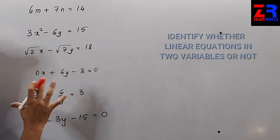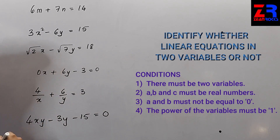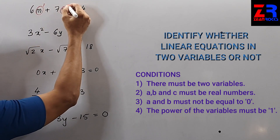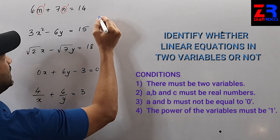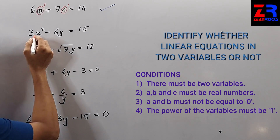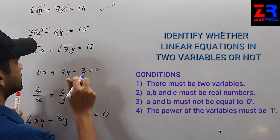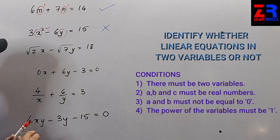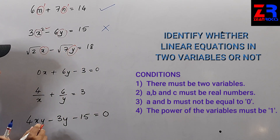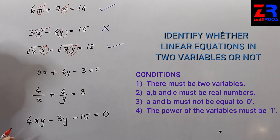In this question we are supposed to identify which of the following are linear equations in two variables. Question 1: m and n are two variables and the power is 1, so this is a linear equation in two variables. Question 2: there are two variables x and y but the power is 2, so this is not a linear equation in two variables. Question 3: there are two variables and the power is also 1, so this is a linear equation in two variables.